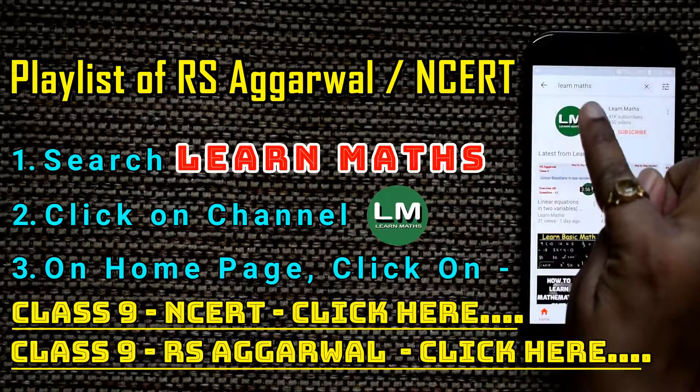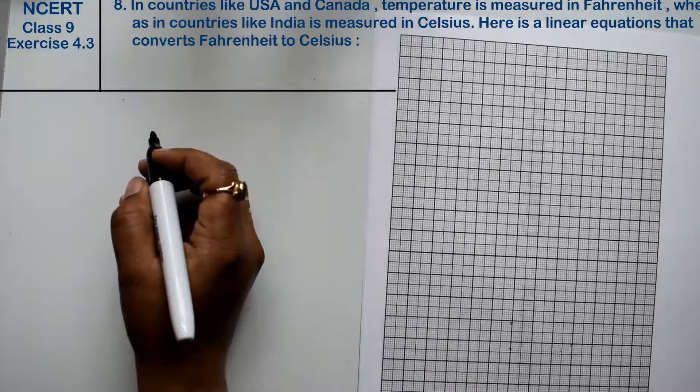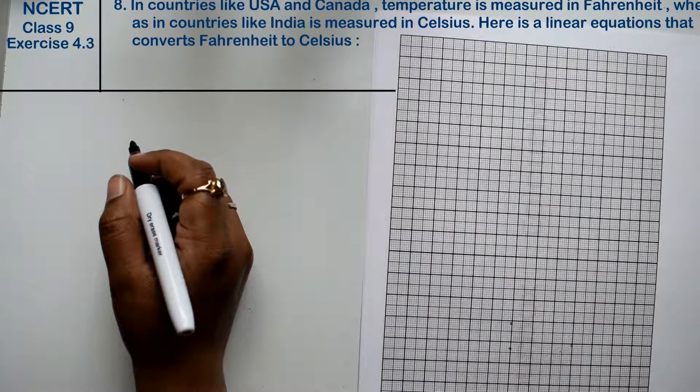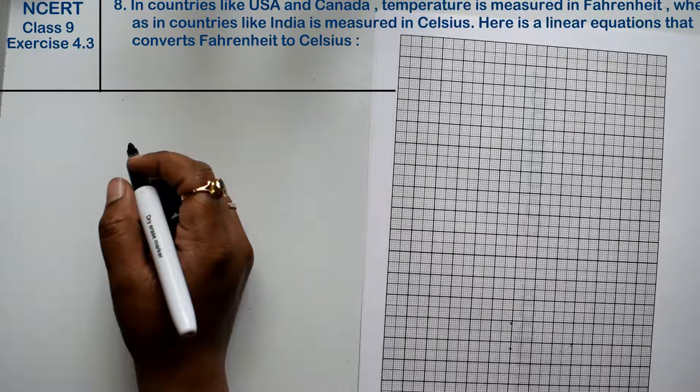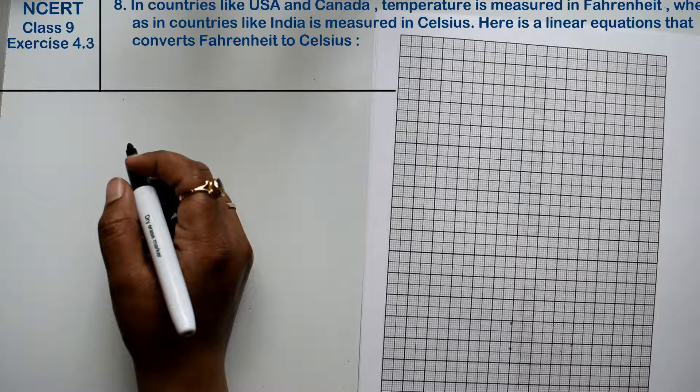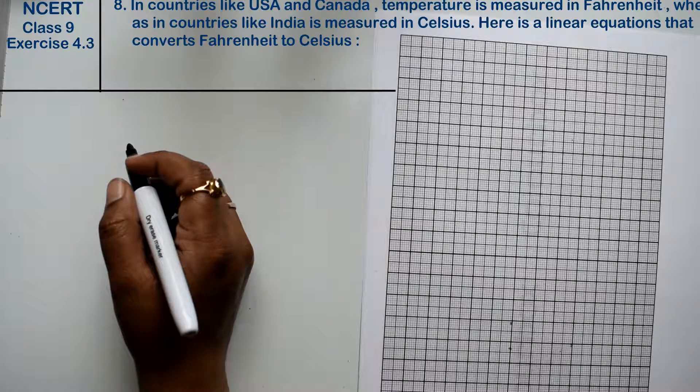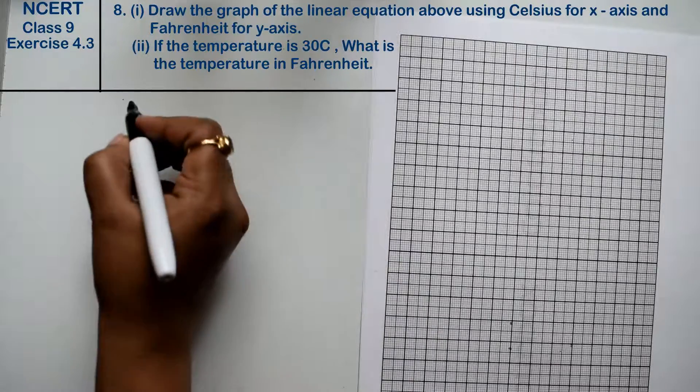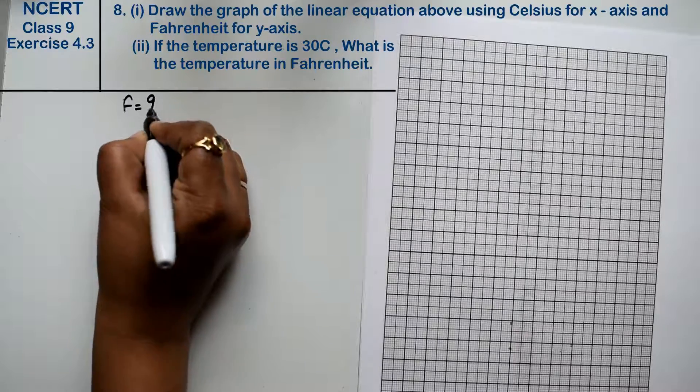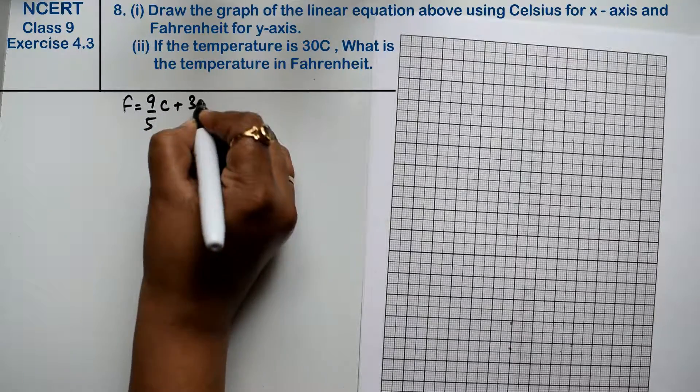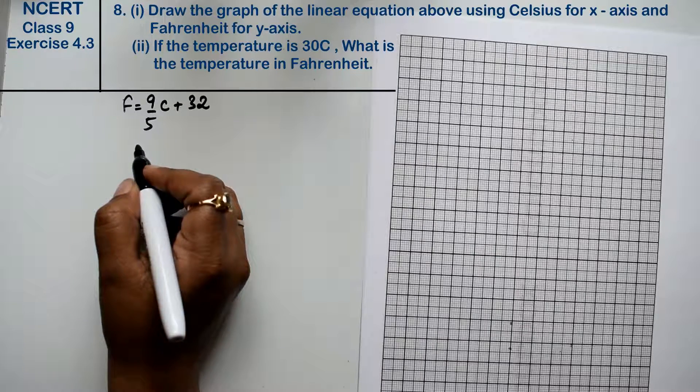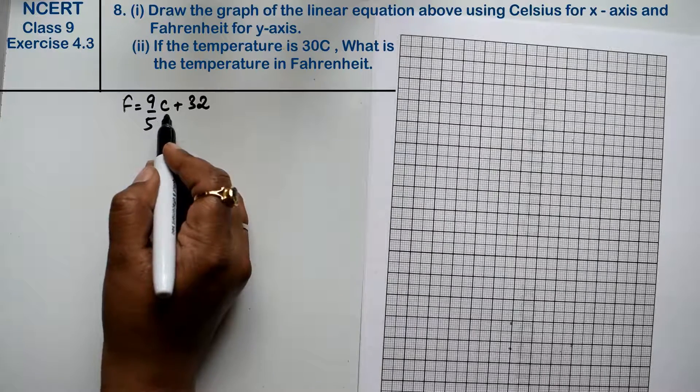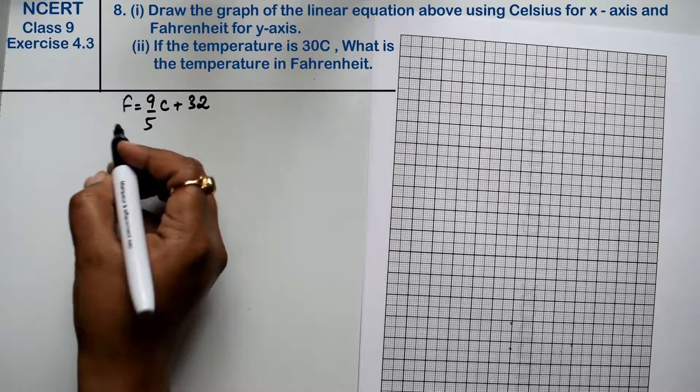Let's do question number 8 of exercise 4.3, that is linear equations in two variables. Question number 8 is: in countries like USA and Canada, temperature is measured in Fahrenheit, whereas in countries like India it is measured in Celsius. Here is a linear equation that converts Fahrenheit to Celsius. First part: draw the graph of the linear equation above using Celsius for x-axis and Fahrenheit for y-axis.